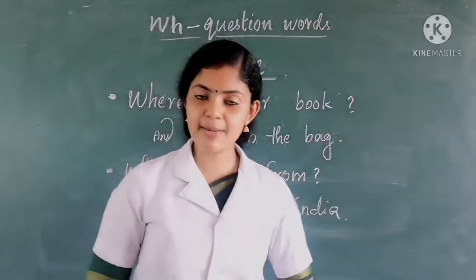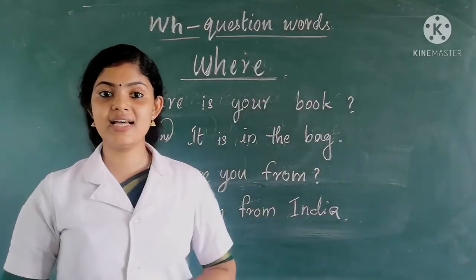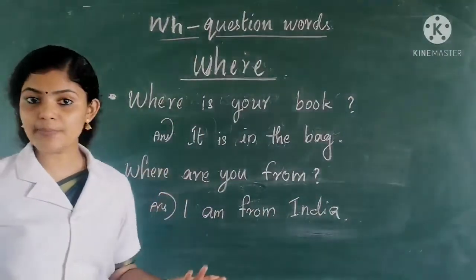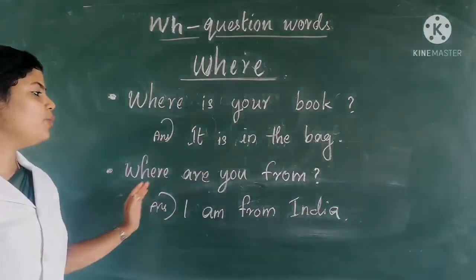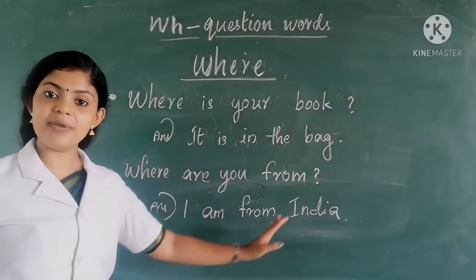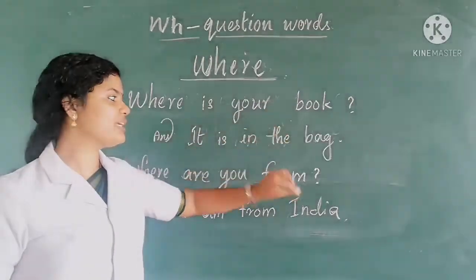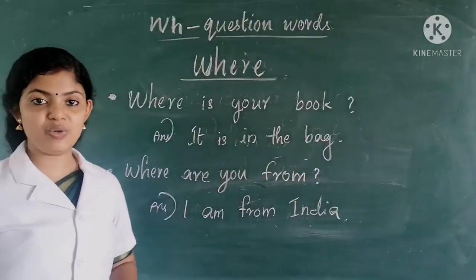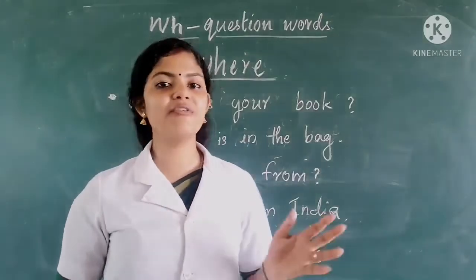The next WH question word is WHERE. We use WHERE to ask about a place or location. For example: Where is your book? Answer — it is in the bag. Next: Where are you from? Answer — I am from India. So we use the question word WHERE to ask the place or position of something.